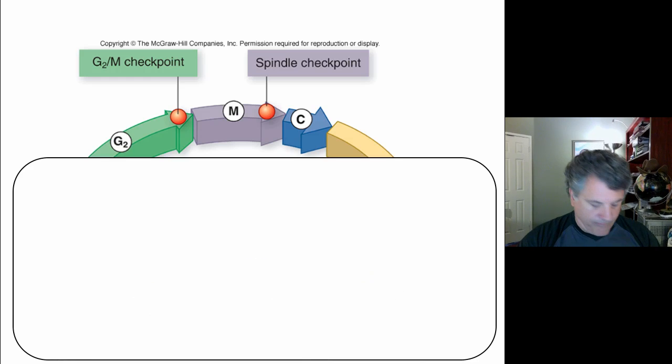And the key event, the key complex involved in this spindle checkpoint, which we could also call the anaphase checkpoint. The cell is asking itself, am I ready to engage in anaphase? That is, am I ready to separate my chromatids?